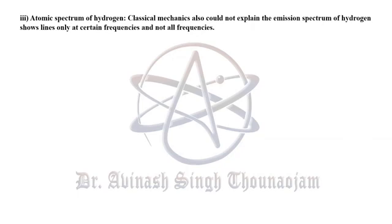The third limitation is the atomic spectrum of hydrogen. When you see the emission spectrum of hydrogen, spectral lines appear only at certain frequencies, not all frequencies, and classical mechanics could not explain why. The solution was given by Niels Bohr in 1913 with his atomic model, using quantum mechanics to explain why light is emitted only at certain frequencies. The fourth limitation, not given in the textbook, is the specific heat of solids; its solution was given by Albert Einstein and Peter Debye.